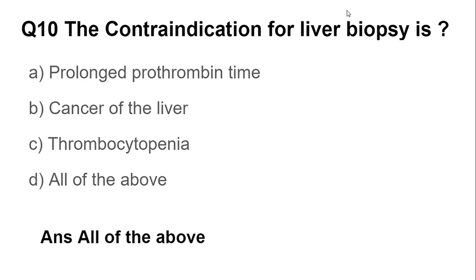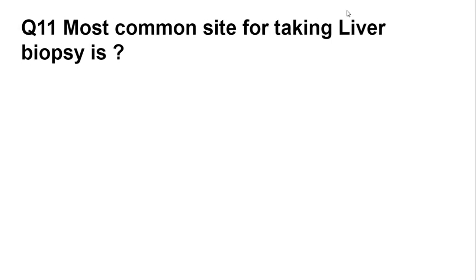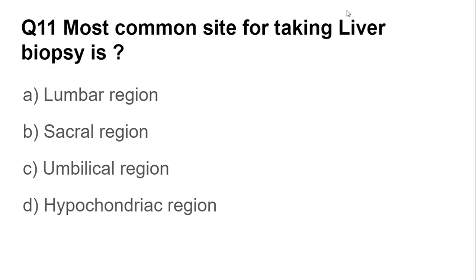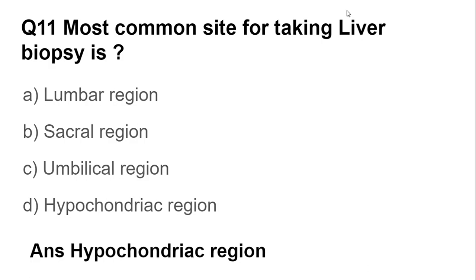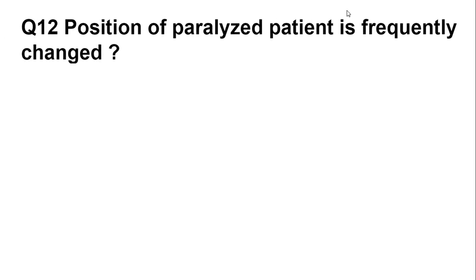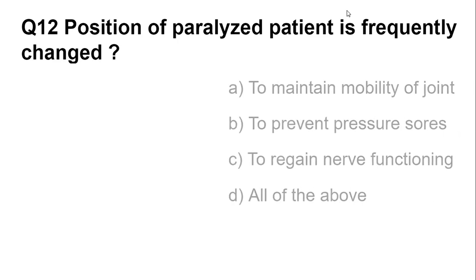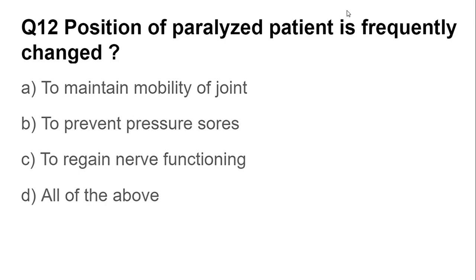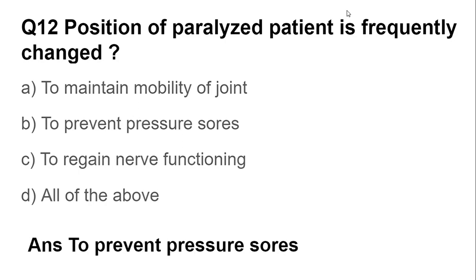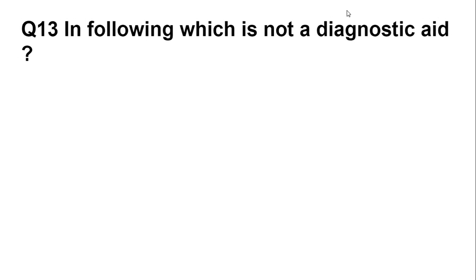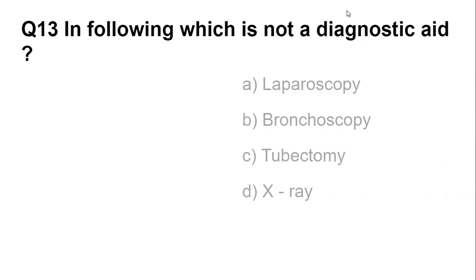There are three conditions in which we do not do a liver biopsy. Question number eleven: the most common site for taking a liver biopsy is the right hypochondriac region. Question number twelve: the position of a paralysis patient is frequently changed to prevent pressure sores.